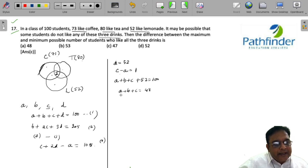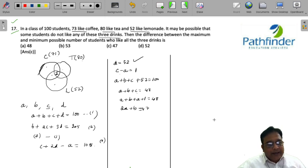And I can write C as A plus 1 in this equation. So, I will get A plus B plus A plus 1 as 48. So, 2A plus B is equal to 47. Will there be multiple values for A and B? Yes, there can be multiple values for A and B. Therefore, D is equal to 52 is indeed the maximum number.